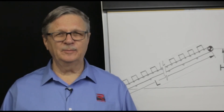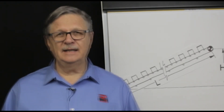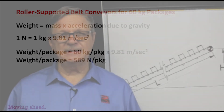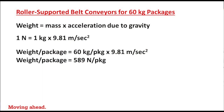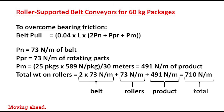Now let's recheck required belt pull with an average package mass of 60 kilograms instead of 25 kilograms. Weight equals 60 kilograms per package times 9.81 meters per second squared, yielding a weight of 589 newtons per package. The sum of 146 newtons per meter of belt, 73 newtons per meter of rotating parts, and a pm of 491 newtons per meter gives a total weight on the rollers equal to 710 newtons per meter.